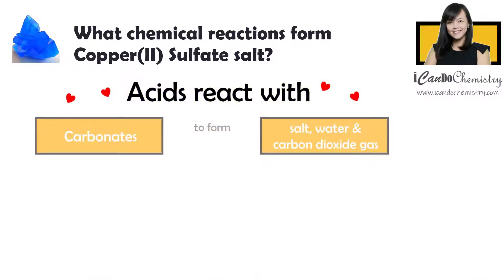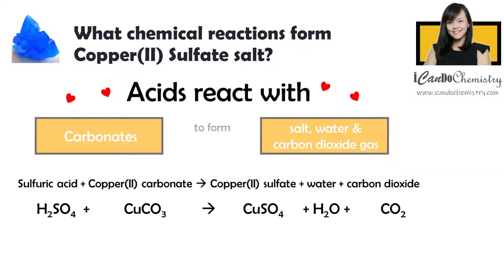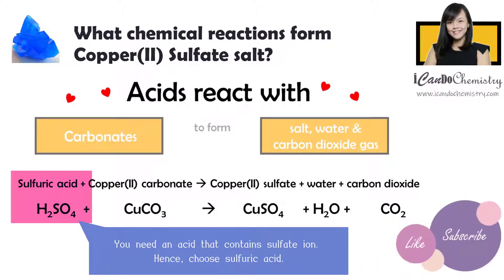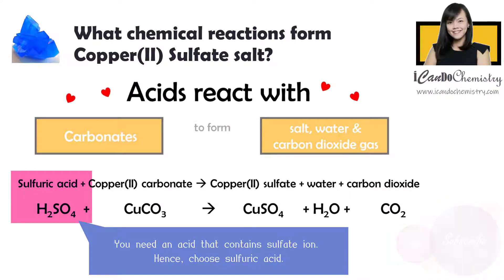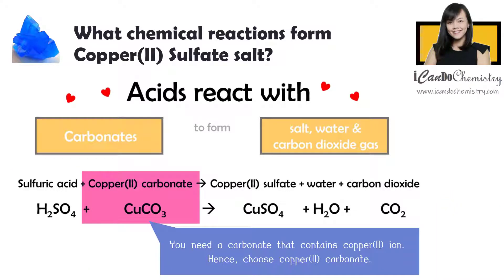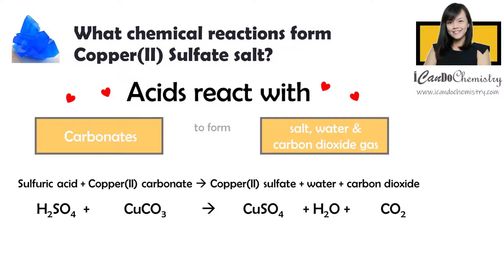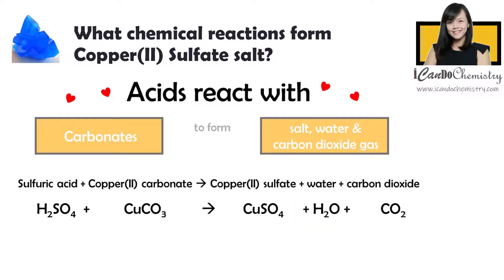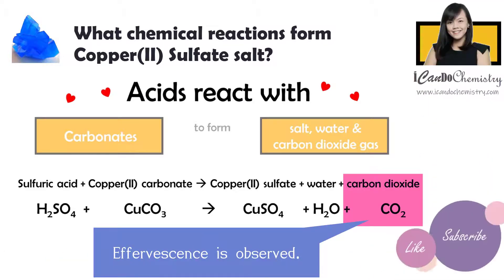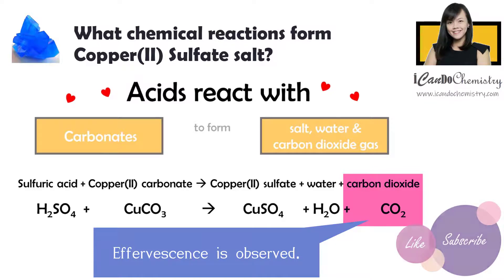Can we make use of the reaction of acid and carbonate to make copper 2 sulfate? Yes, we can. For acid, we will choose sulfuric acid because this is the acid that will provide the sulfate. And the carbonate that we use needs to contain the copper 2 ion, hence we will use copper 2 carbonate. When copper 2 carbonate reacts with sulfuric acid, copper 2 sulfate is formed together with water and carbon dioxide gas. We can't observe the production of water, but we will observe effervescence due to production of carbon dioxide gas.